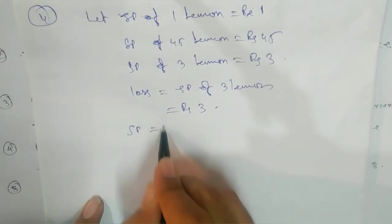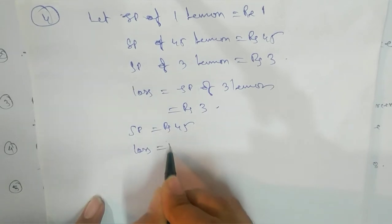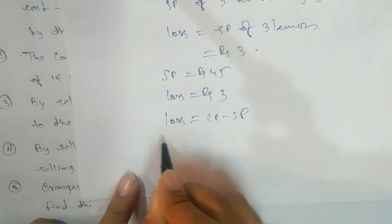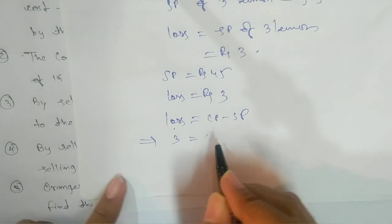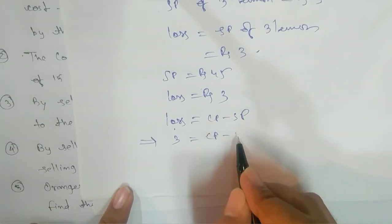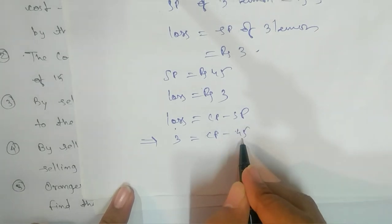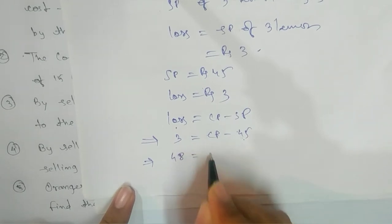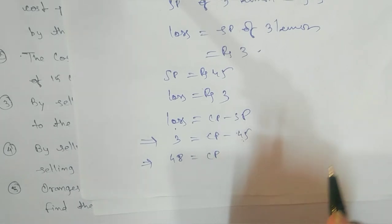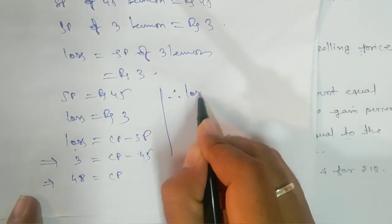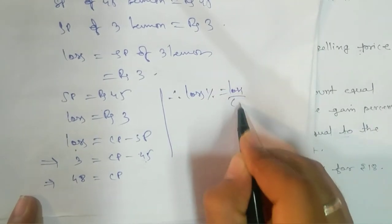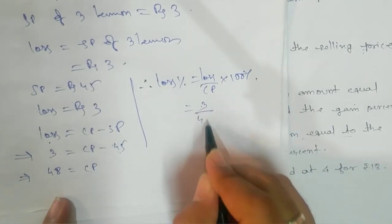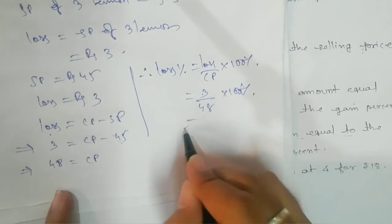SP = ₹45 and Loss = ₹3. Using Loss = CP − SP: 3 = CP − 45, so CP = ₹48. Loss% = (Loss / CP) × 100% = (3 / 48) × 100%. Cancel and simplify to get the loss percent.